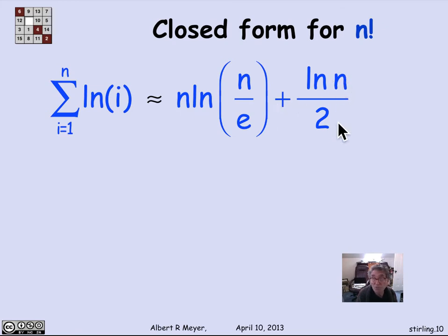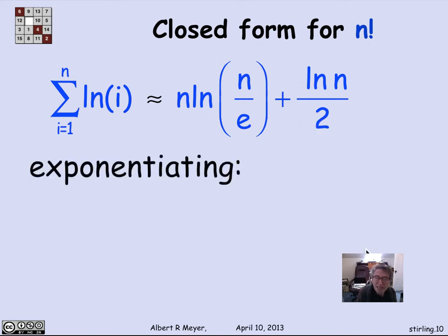Well now, if I'm interested in an estimate for n factorial, so let's exponentiate both sides. So taking e to this sum gives me a product of e to this times e to that. Well, e to this is really e to the log of n over e to the nth power, which means it's n over e to the n. And this is e to the log of n to the power half, or square root of n.